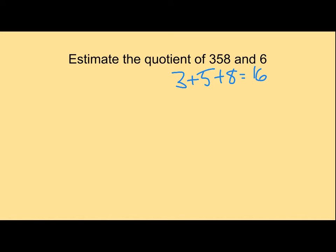But 358, that's really close to 360. It's only 2 away. And 360 has 36 in it. And then it's got it just bumped up to another place value. Now I know I can divide this pretty easily. I'm going to use my traditional on this one.